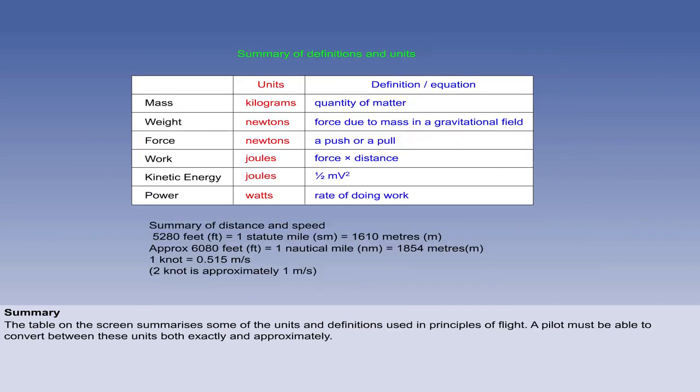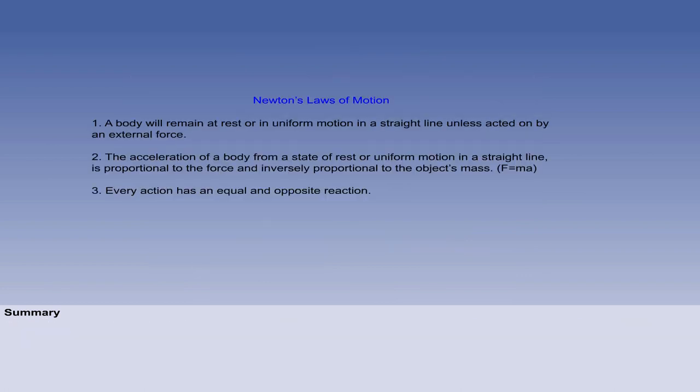Look again at the distance and speed conversions. There are 5,280 feet in a statute mile, and 6,080 feet in one nautical mile. As an approximation, half the knots define meters per second. You are then introduced to Newton's three laws of motion.